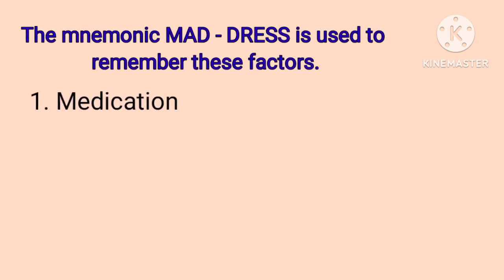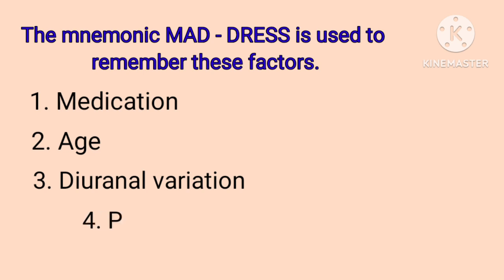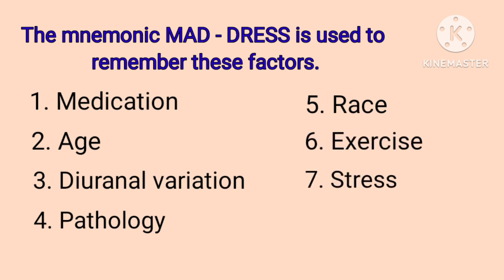The first one is Medication. The second one is Age. The third one is Diurnal Variation. The fourth one is Pathology. The fifth one is Race. The sixth one is Exercise. The seventh one is Stress. The eighth and last one is Sex.